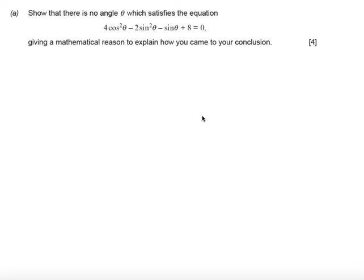In this question we're asked to show that there is no angle theta that satisfies the equation 4cos²θ - 2sin²θ - sinθ + 8 = 0, giving a mathematical reason to explain how you come to your conclusion.